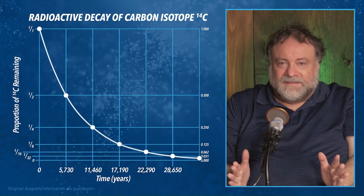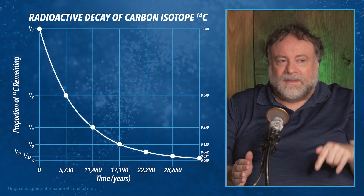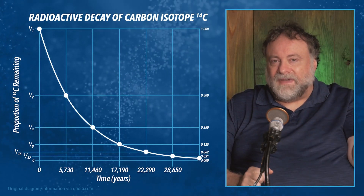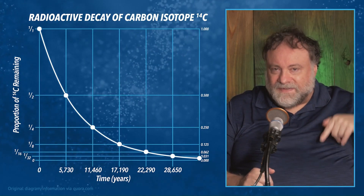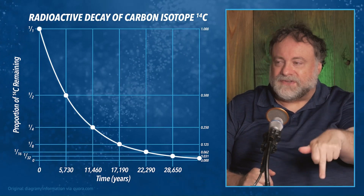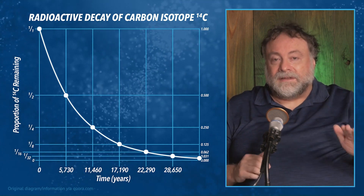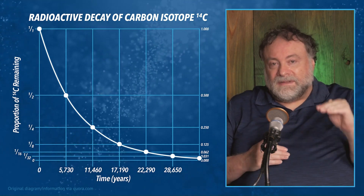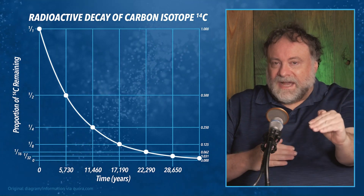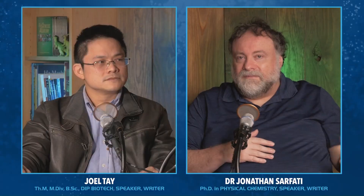After enough half-lives there's only about a millionth of the original left. It starts off as one in every trillion carbon atoms as carbon-14. So it's going to be below detector limit after about 20 half-lives.